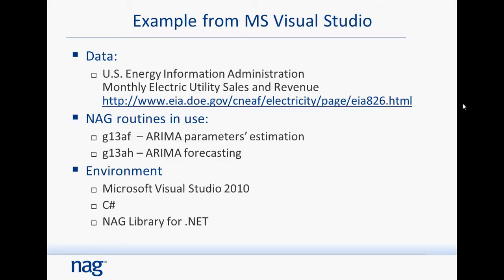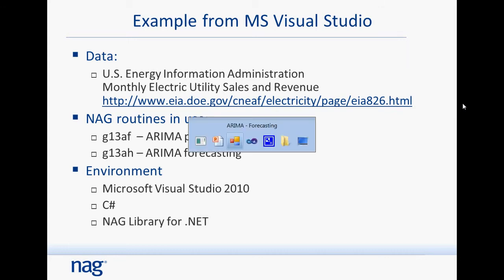The actual dataset used in this example comes from the US Energy Information Administration — specifically sales and revenue data for electric utilities. There are two NAG routines in use: one for parameter estimation and one for forecasting. The example is created in Microsoft Visual Studio 2010, written in C# and uses the NAG library for .NET.